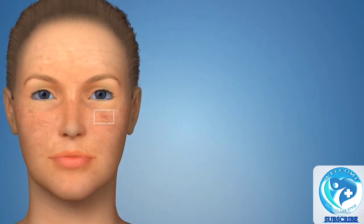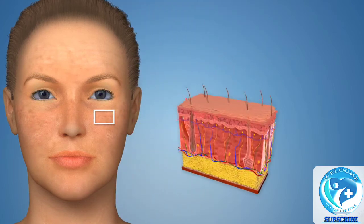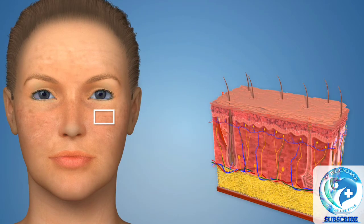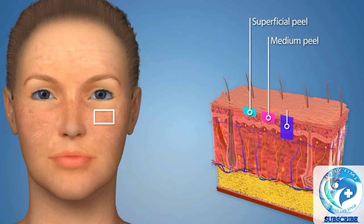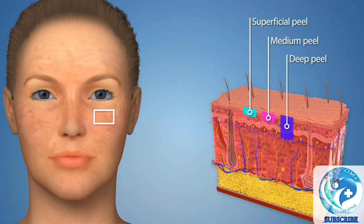There are three basic types of chemical peels used depending upon the extent of skin damage: superficial chemical peels, medium chemical peels, and deep chemical peels. Your provider will help you determine which peel is most appropriate for your treatment goals. This animation will discuss medium chemical peels.